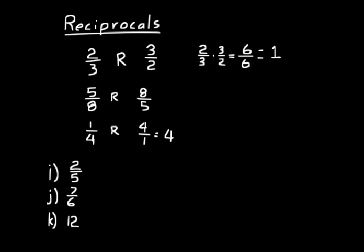Let's do practice problems i, j, and k — write the reciprocal of each fraction. For i, the reciprocal is five-halves. For j, it's six-sevenths. For k, twelve isn't a fraction, but remember: any whole number can be written as a fraction by putting it over one, so twelve becomes twelve over one. The reciprocal of twelve over one is one over twelve.